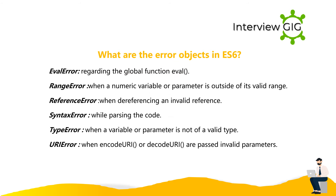What are the error objects in ES6? EvalError — regarding the global function eval. RangeError — when a numeric variable or parameter is outside its valid range. ReferenceError — when dereferencing an invalid reference. SyntaxError — while parsing the code. TypeError — when a variable or parameter is not of a valid type. URIError — when encodeURI or decodeURI are passed invalid parameters.